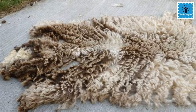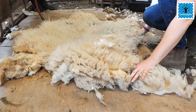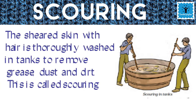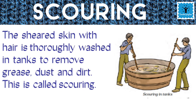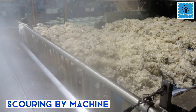The second step is called scouring. The fleece of sheep contains a lot of dust, dirt, grease, and sweat, so it is washed thoroughly in big tanks. This process is called scouring. Nowadays scouring is done by machines.